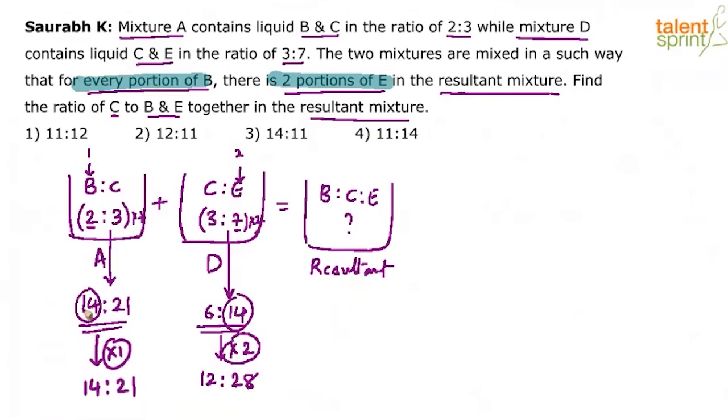And automatically, when you take one portion of B, one portion of C also comes out in that ratio of 14 to 21. Similarly, when you take two portions of E here, accordingly, the portions of C would come out. So now if you see, this 14 here represents B, this 21 represents C, this 12 here represents C and 28 represents E.